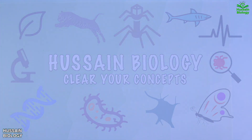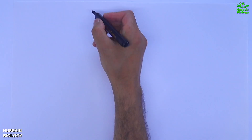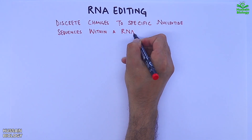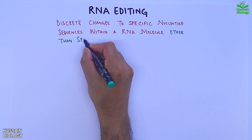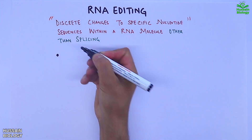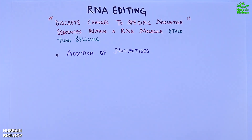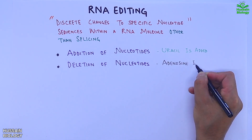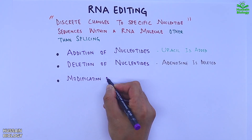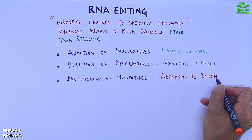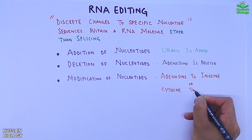In this video we will be discussing about RNA editing. It is the discrete changes to specific nucleotide sequences within the RNA molecule, other than splicing. It involves three basic processes: addition of nucleotides, like uracil is added; deletion of nucleotides, like adenosine is deleted; or modification of nucleotides, like the conversion of adenosine to inosine or cytosine to uracil.